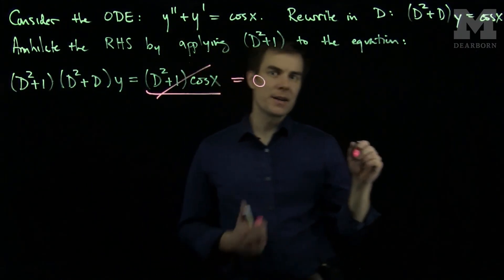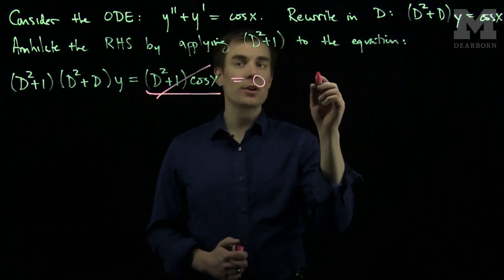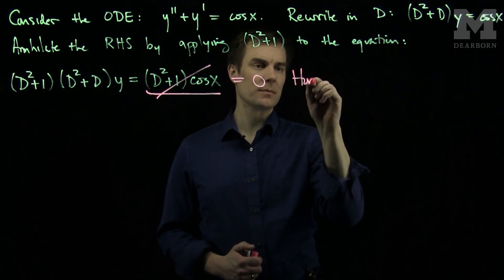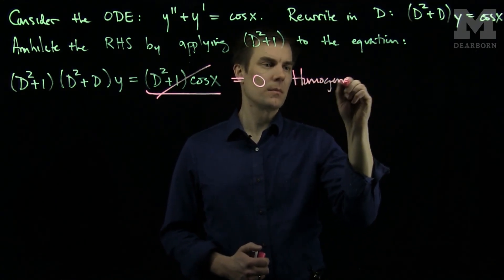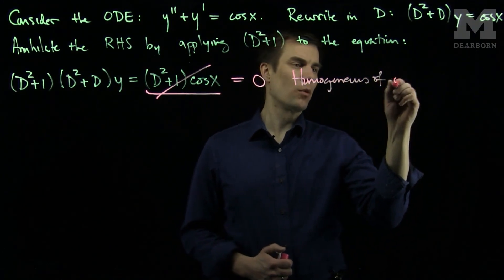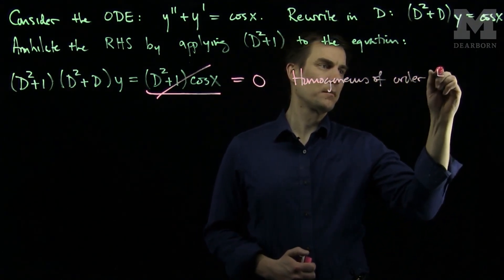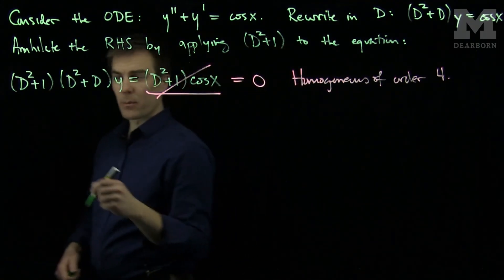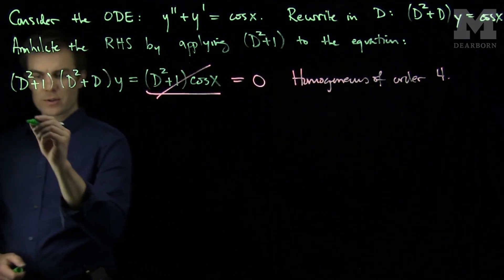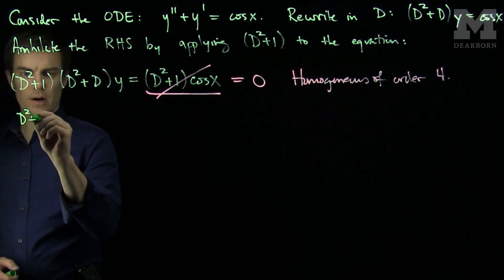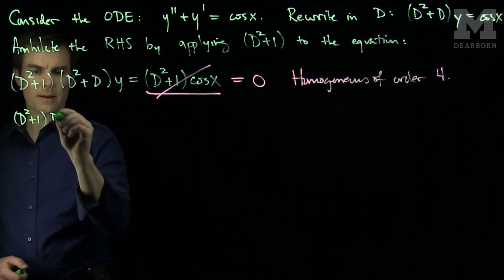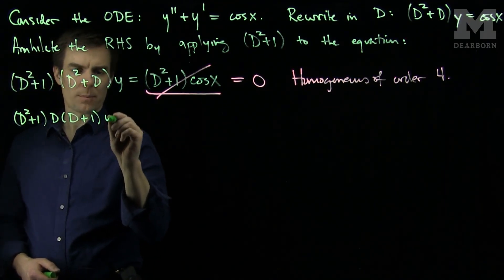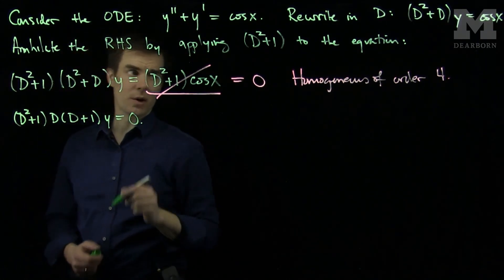By annihilating the right hand side, we've turned it into a homogeneous problem. This is homogeneous of order 4. We can use what we know from homogeneous equations and rewrite our problem as (D² + 1)(D² + D) applied to y equals 0, factoring out (D² + 1).